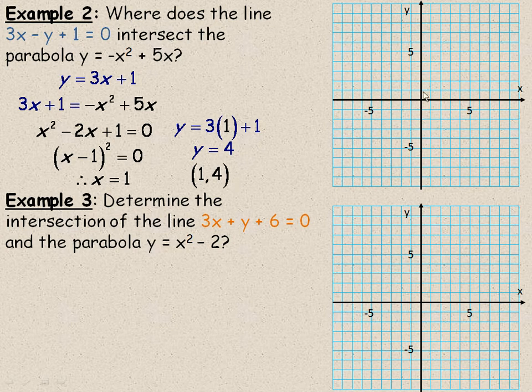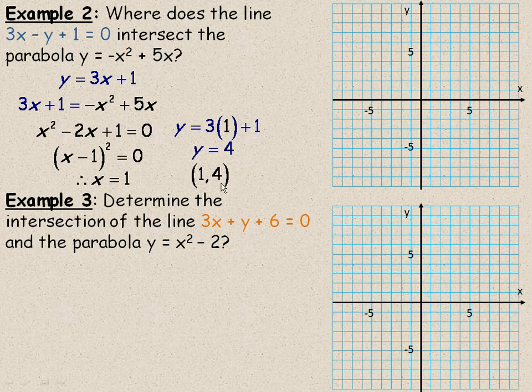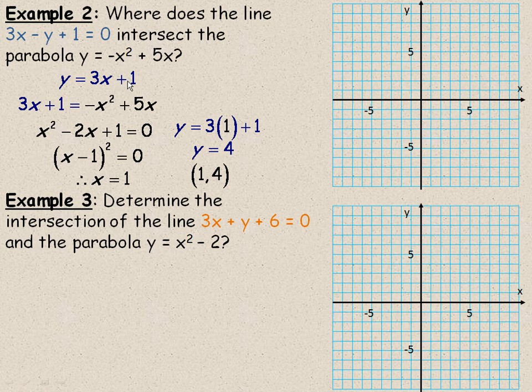Now I'm going to draw the line and the parabola over here to show you what that looks like. So first of all, the line, this is really in y = mx + b form. So 1 is the y-intercept. So there's a y-intercept at 1.